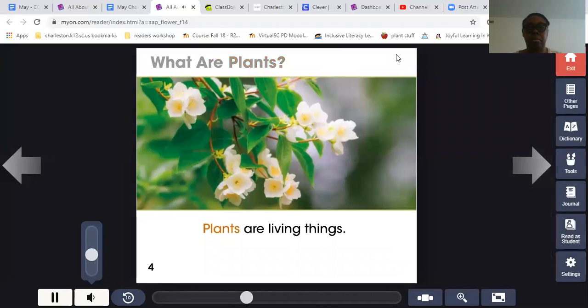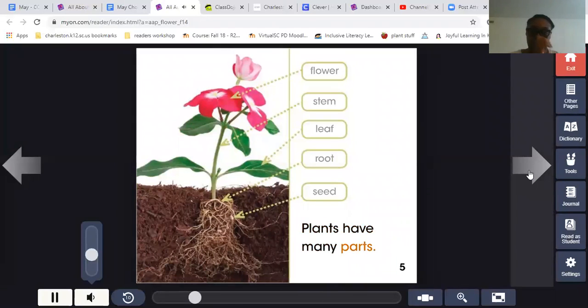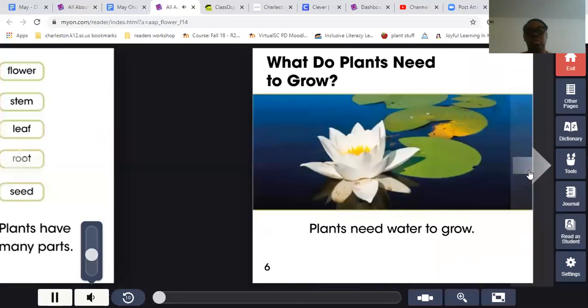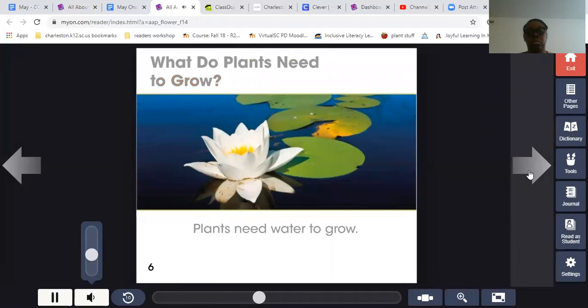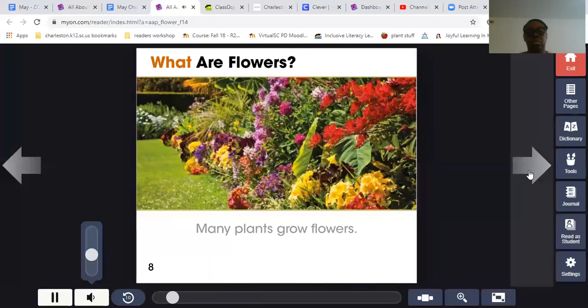So all about flowers by Claire Fromm. You can control the volume on the side. What are plants? Plants are living things. Plants have many parts. Flower, stem, leaf, root, seed. What do plants need to grow? Plants need water to grow. Plants need sunlight and air to grow.